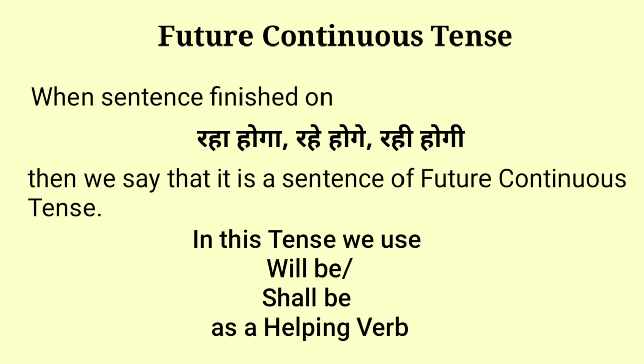Future continuous tense mein jab bhi koi vaakya 'Raha hoga', 'rahe hogay', 'rahi hogi' par samapt hota hai, tab hum keh sakte hain ki yeh vaakya future continuous tense ka vaakya hai. Is tense mein 'will be' aur 'shall be' helping verb ke roop mein prayog kiye jaate hain.